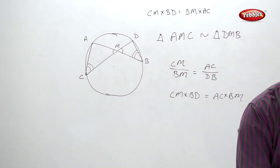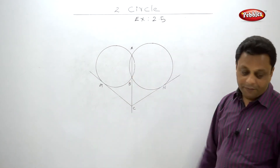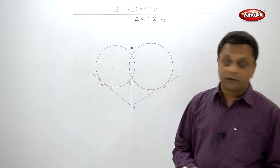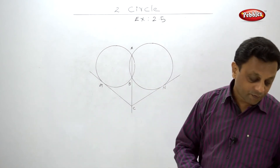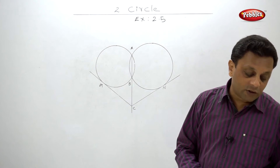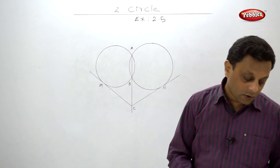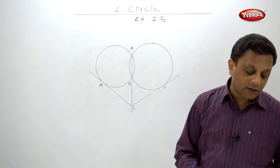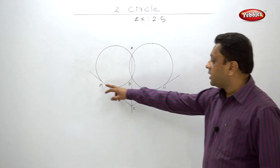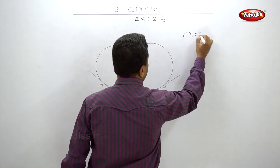As shown in the figure, two circles intersect each other at two points A and B. Segment AB is a chord of both circles. Point C on the line AB is exterior to both circles. From point C, tangents are drawn to each circle touching at M and N respectively. Prove that CM is equal to CN.